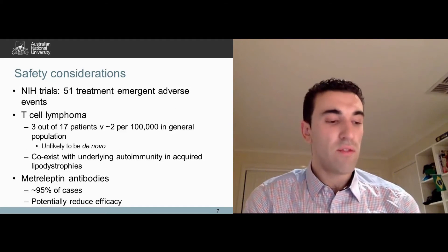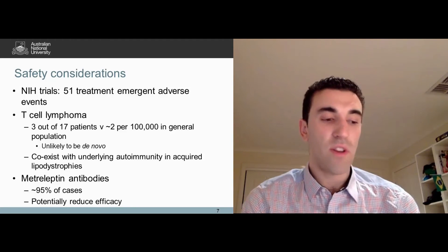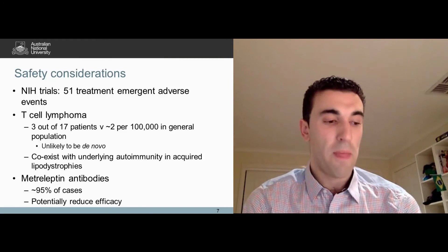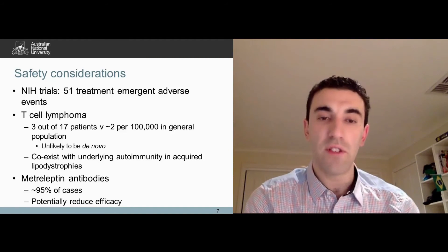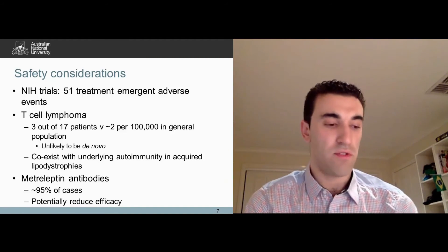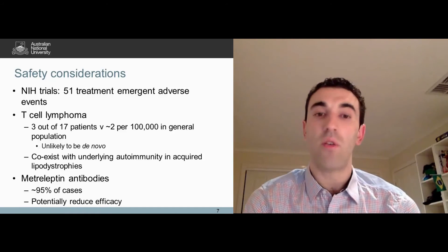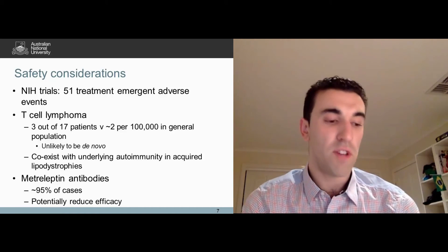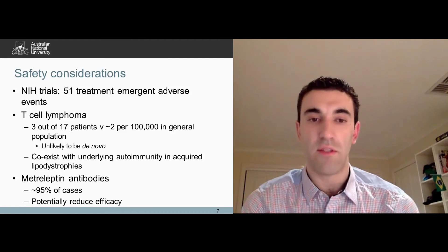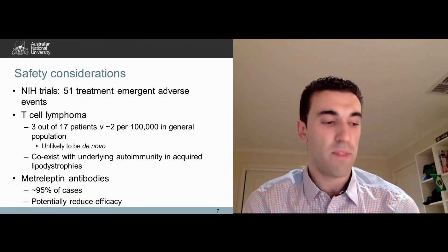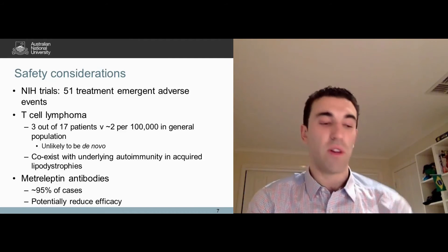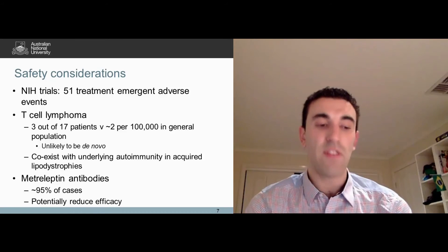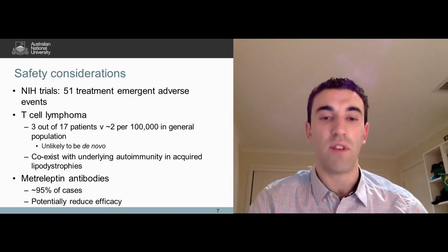T-cell lymphoma is the most serious adverse event noted with Metreleptin use. The lymphoma is probably more a feature of lipodystrophy, as patients exhibit marked autoimmune destruction of adipocytes, and is thus unlikely to be de novo. Anti-Metreleptin antibodies occur frequently, and this could potentially impact on drug efficacy.